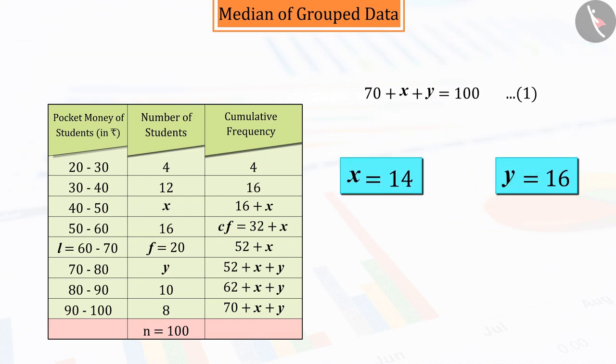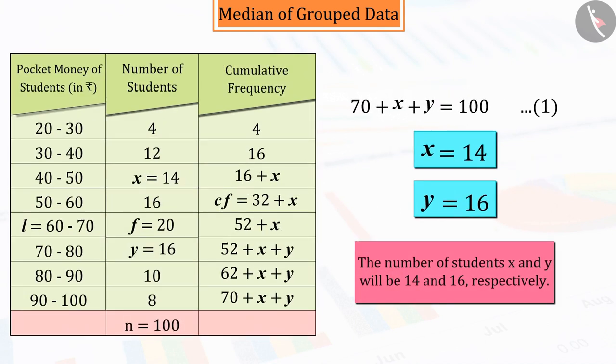So, we can say that the number of students x and y will be 14 and 16 respectively.